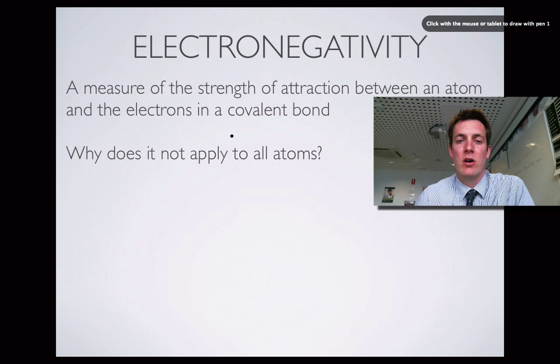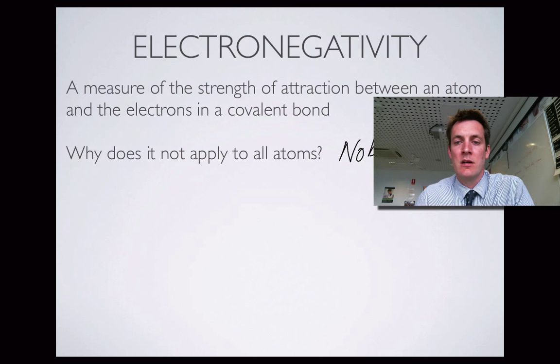Now why does it not apply to all atoms? Well, in particular, you've got noble gases. Noble gases often don't get given electronegativity values because they don't tend to form bonds with other atoms. They're quite unreactive, so if you can't make them bond with other atoms, you can't measure how strongly they attract the electrons in a covalent bond. So electronegativity is a measure of the strength of attraction between an atom and any electrons it's sharing with another atom in a covalent bond.